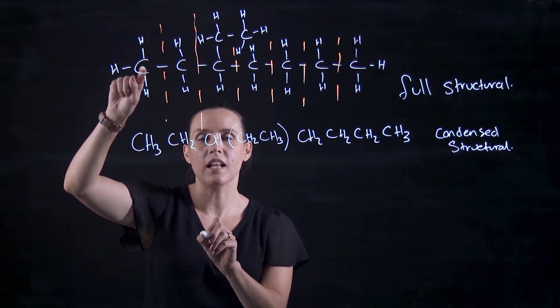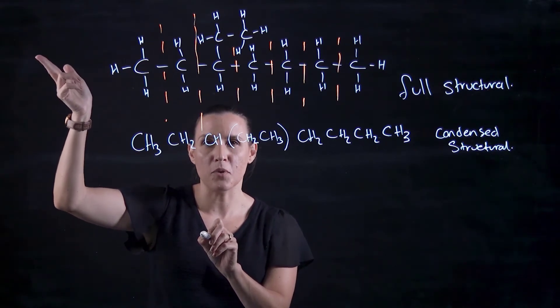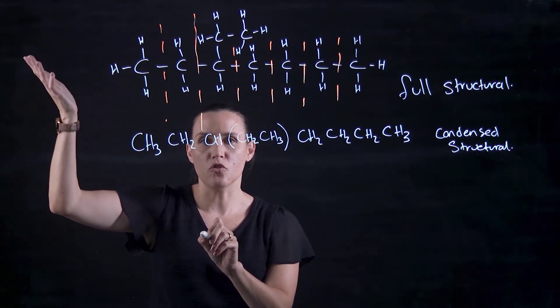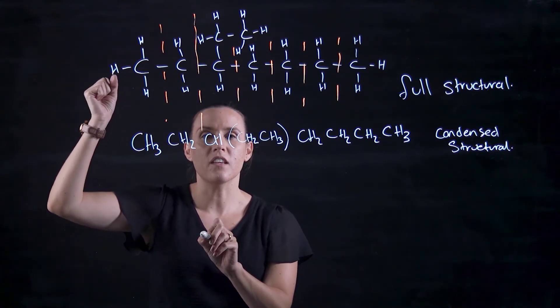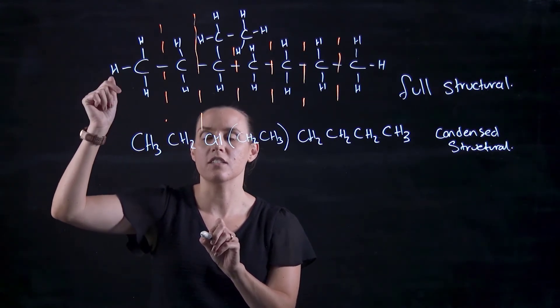If they're bonded to an electronegative atom—oxygen, sulfur, it wouldn't be bonded to chlorine but those sorts of groups, nitrogens—then you draw them in. You draw in everything that's not a carbon or hydrogen: oxygen, sulfur, chlorine, halogens.